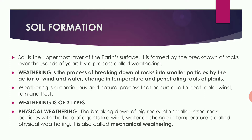First is soil formation. Soil is the uppermost layer of the earth's surface. It is formed by the breakdown of rocks over thousands of years by the process called weathering. Weathering is defined as the process of breaking down of rocks into smaller particles by the action of wind, water, change in temperature, and penetrating roots of plants.